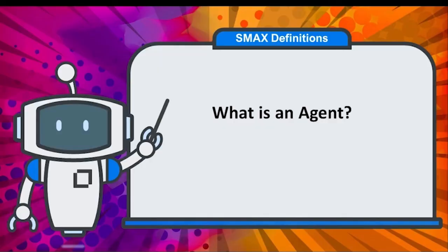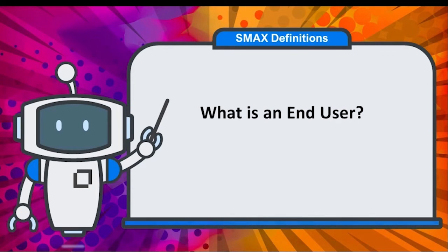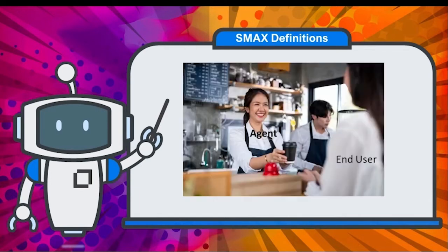Now that the end user has created the request, let's look at how that looks for an agent. An agent is an IT employee who uses the primary SMAX interface to support IT services — they work on service requests, incidents, changes, and other areas. An end user is someone who uses the portal to create and follow up on requests. If SMAX were a coffee shop, agents work behind the counter while end users are ordering the drinks.